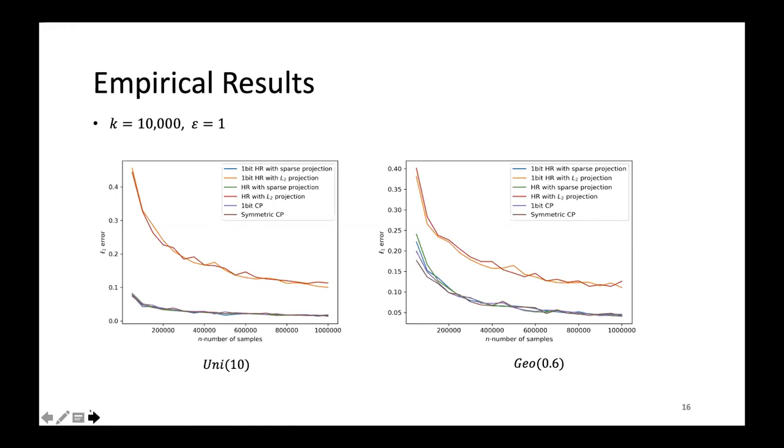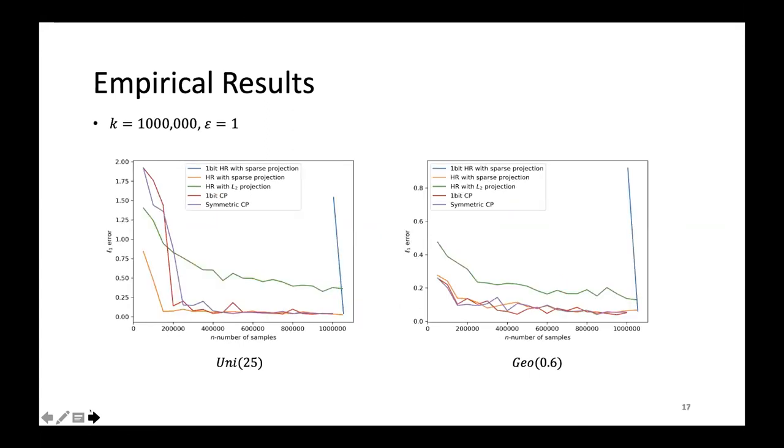Since we set k to 10,000, which is much smaller than the sample size n, the one-bit HR with sparse projection is well defined, and the performance compared to our method is almost the same. This is not surprising, as both methods have the same theoretical sample complexity. On the other hand, when k is much larger, for example 1 million, one-bit HR is not well defined when the number of samples is less than k. Thus, the blue line which represents the one-bit HR starts when n exceeds one million. We note that HR with sparse projection still performs well in this case, but each user will incur log k bits of communication. Our one-bit CP only needs one bit to achieve the same accuracy. For our symmetric CP method, the communication cost, which is log s plus log log(k/s), is also lower than HR.